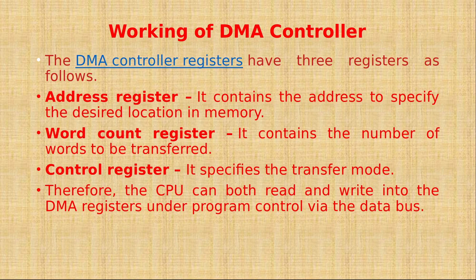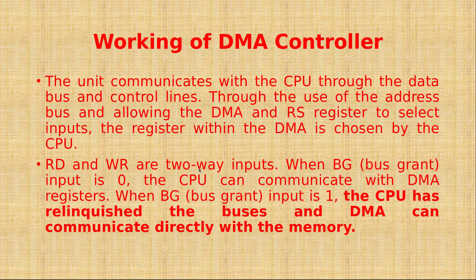The DMA controller consists of three registers: the address register, word count register, and control register. The address register specifies the address of the desired location. The word count register counts words while transferring data between input/output devices and memory. The control register holds the transfer mode, allowing the CPU to both read and write into the DMA register under program control via the data bus.